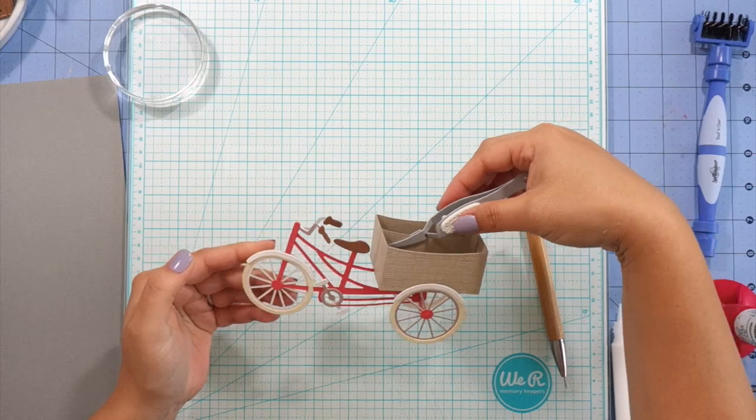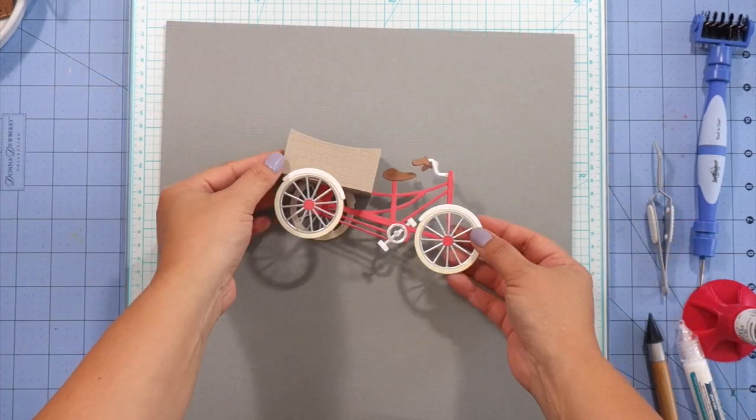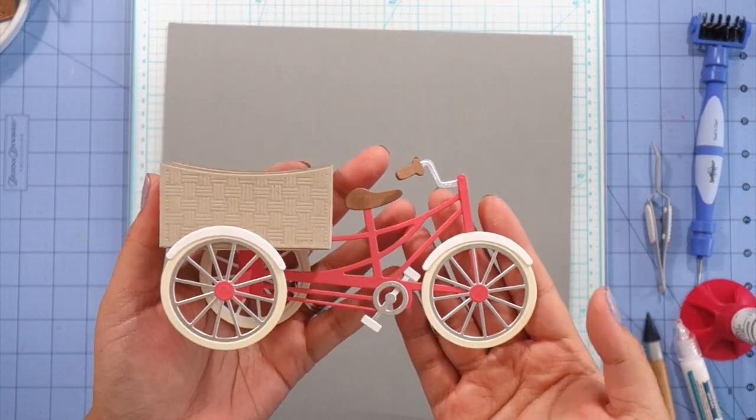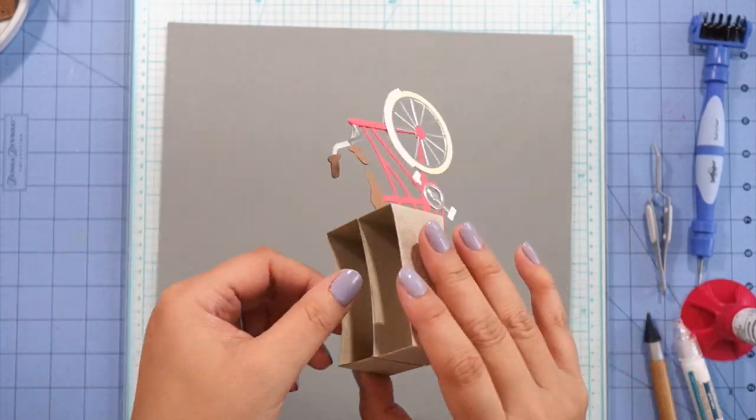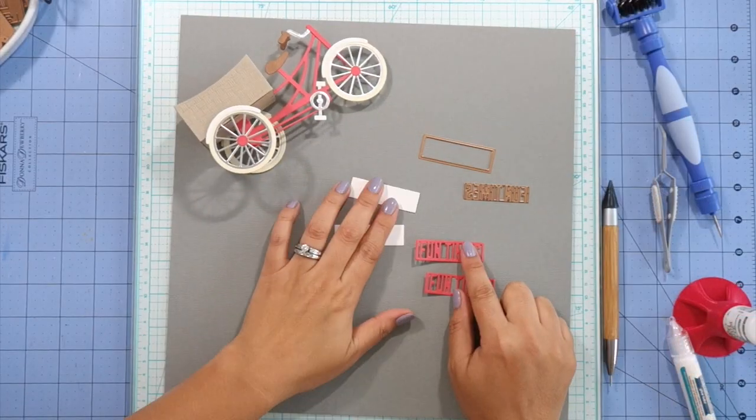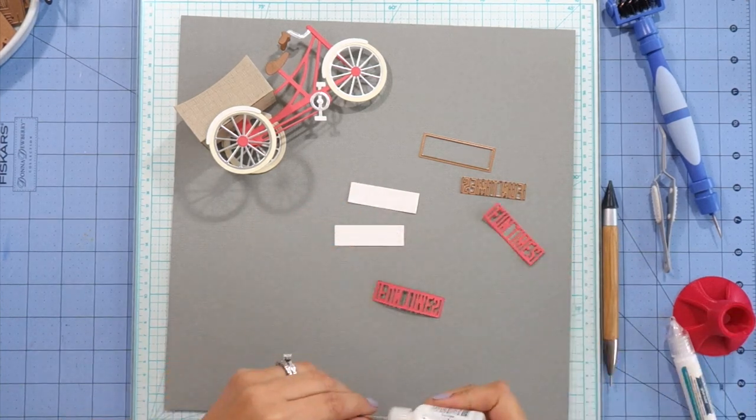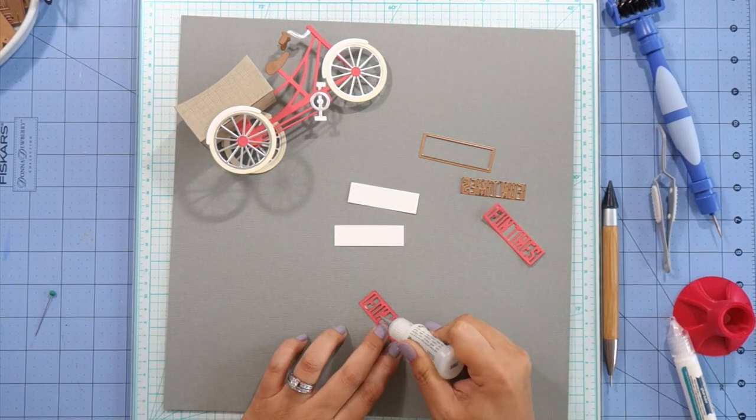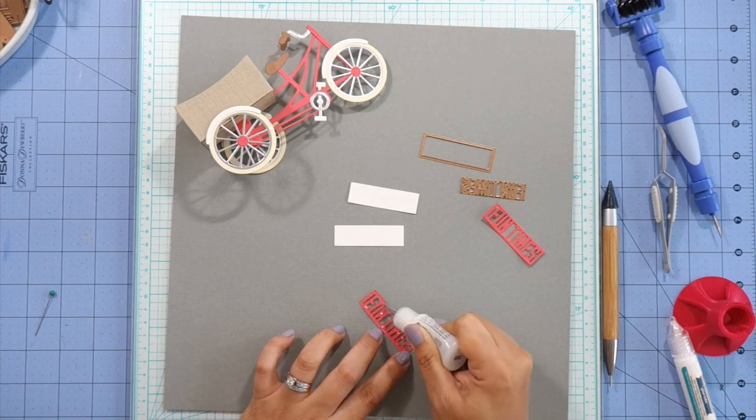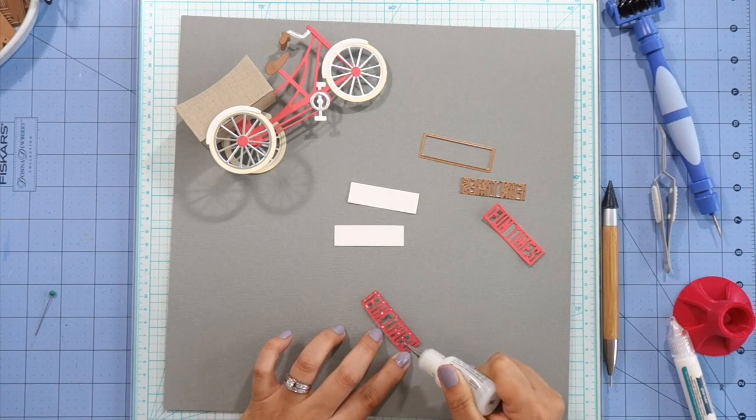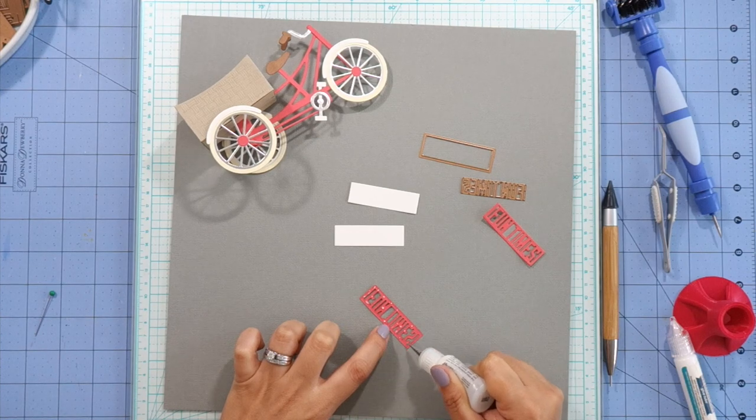So this is the little tricycle done. Now all it needs is a little embellishment. This little cruiser is so cute from whichever side you look at it from. I decided to keep it simple and I'm just going to add the sentiment that comes with a large die of the month.